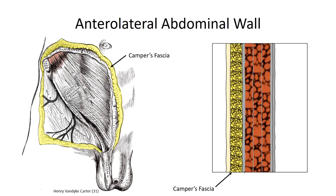Camper's fascia does serve an important function: it provides insulation against loss of body heat and cushioning to protect internal organs from mechanical trauma. A little trick for remembering the name — if you go camping in the winter, you'd like a nice thick sleeping bag to protect you from the cold. That's what Camper's fascia does.